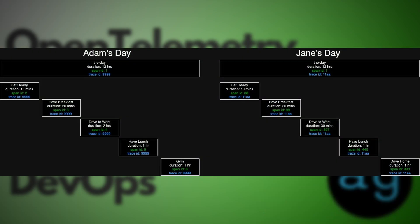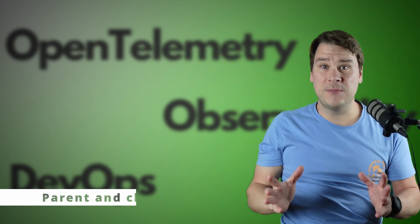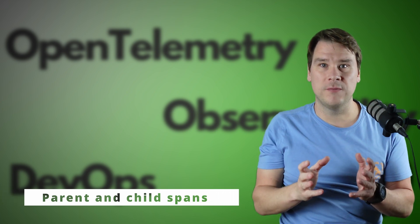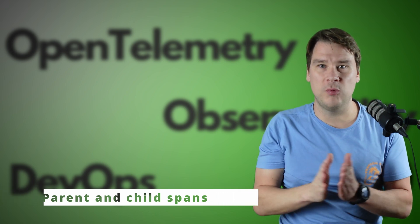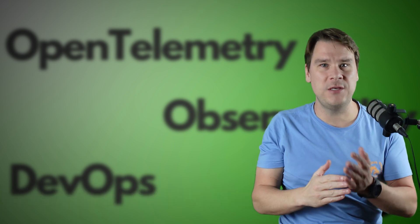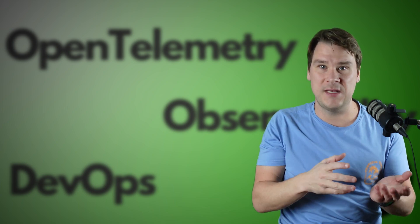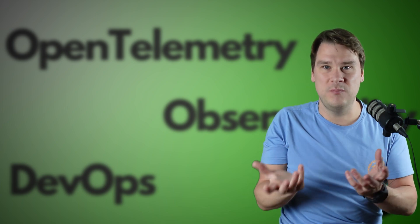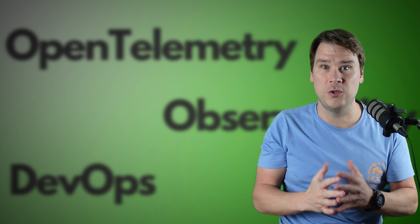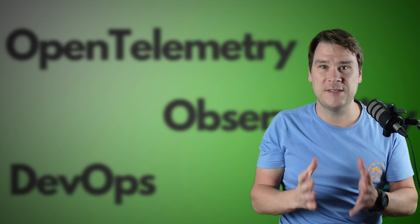So imagine two people pushing their day into the same OpenTelemetry backend — that's how the backend can decide that's Adam's day and that's Jane's day. And that would be absolutely fine if humans did only one thing at once. But we don't — we multitask. We drink coffee and drive to work, we answer emails, be on Zoom calls, and watch YouTube videos at the same time.